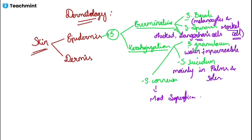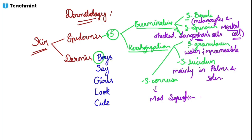You can remember these five layers with the help of a mnemonic: 'Boys Say Good Cute.' B for basale, S for spinosum, G for granulosum, then L for lucidum, and C for corneum. This is how you can remember the different layers of epidermis from the innermost to the outermost layer.